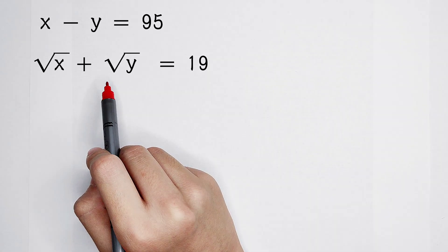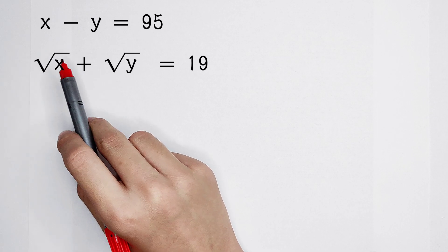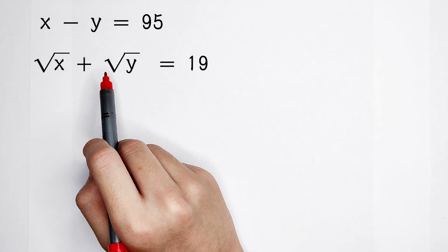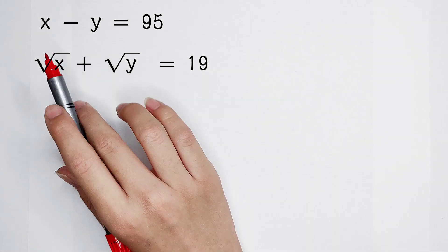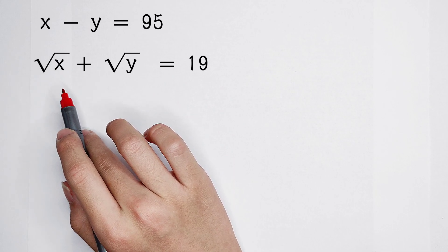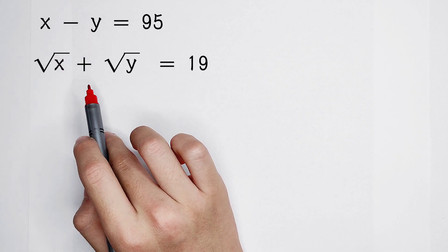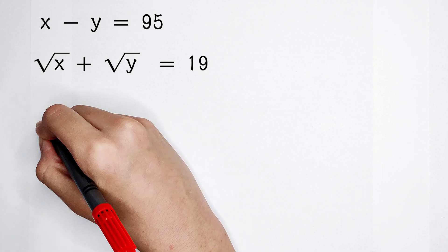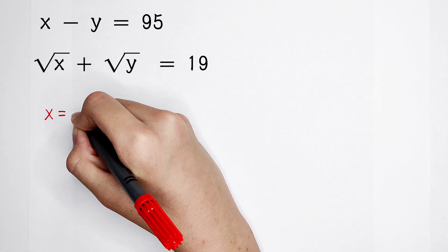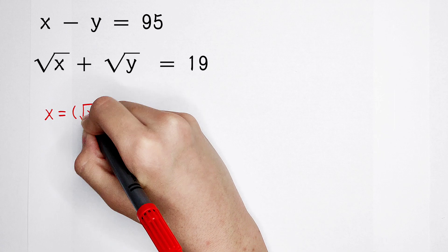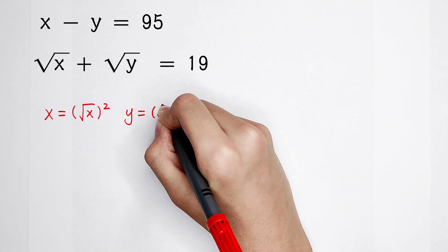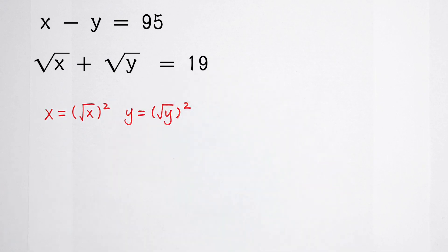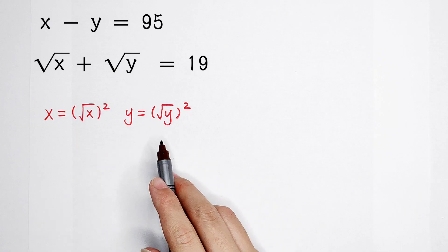How can I solve that? The first equation is about x and y, but the second equation is about square root of x and square root of y. So we have to find the relationship between x and square root of x, and y and square root of y. Everyone knows that x can be written as square root of x, then squared. Similarly, y can be written as square root of y, then squared. Any non-negative number can be written as the square root of itself, then squared.